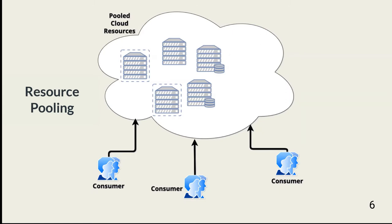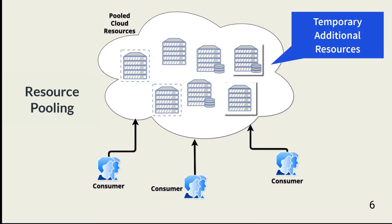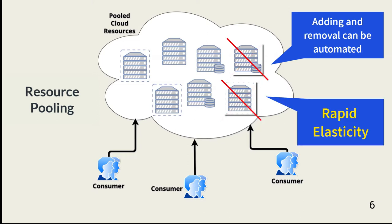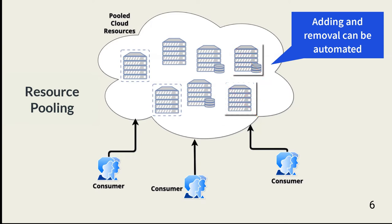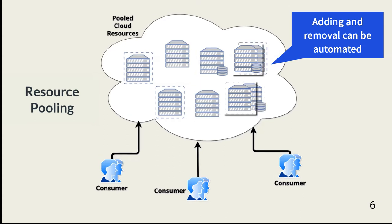Resource pooling also enables rapid elasticity. For example, if the consumer has a big sales event, the resources used by the sales system can be quickly increased for the period of the sale. When no longer needed, the additional resources are removed. Rapid elasticity can enable the addition or reduction of resources within minutes, whereas traditional data center implementations might take weeks to implement. Depending on the CSP agreement, changes in resource use might be automatic based on measured use.